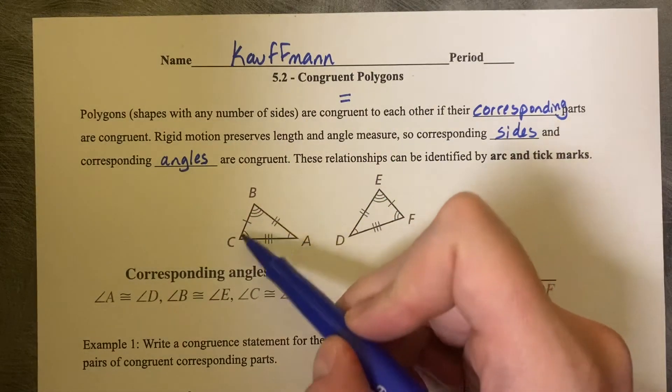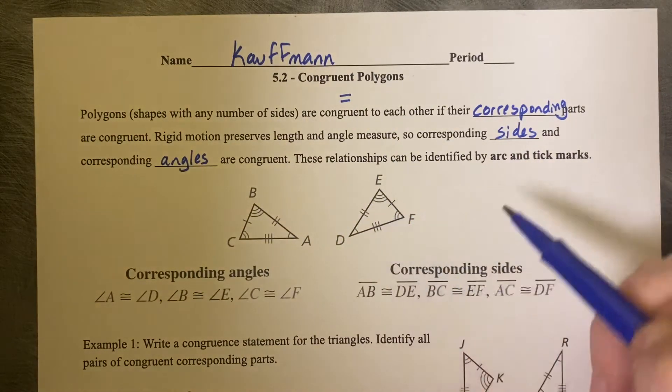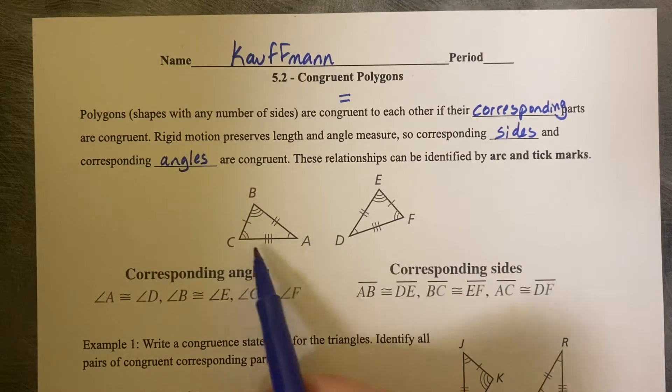matches with the two tick marks. Then BC, the one tick mark, matches with the one tick mark. And AC, the three, and the three.